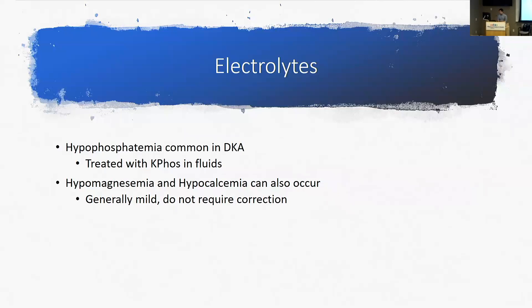Hypophosphatemia is also common in DKA, which is why potassium replacement includes K-phos in addition to KCl. You can also see hypomagnesemia and hypocalcemia, but these tend to be very mild and don't warrant specific treatment.